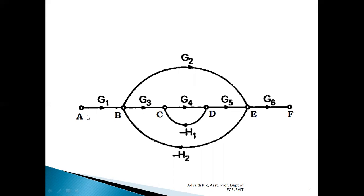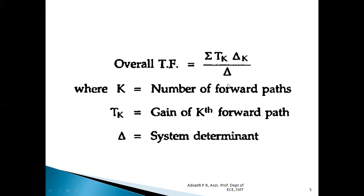I've named the nodes A, B, C, D, E and F. We already know Mason's gain formula. It is given by the equation: summation of Tk·delta_k divided by delta, where k is the number of forward paths, Tk is the gain of the kth forward path, and delta is the system determinant. This Mason gain formula can be understood in detail by solving this problem.